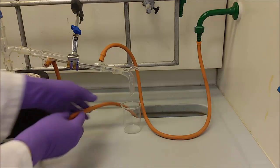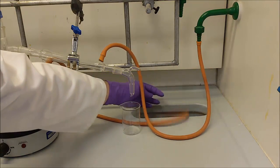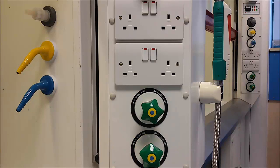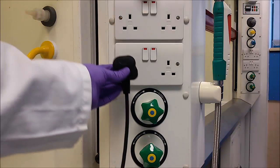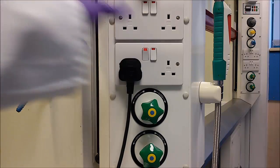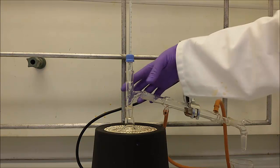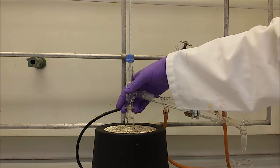Put the free ending of the tubing inside the sink. Connect the mantle to electricity and make sure that all the parts of the setup are joined well.